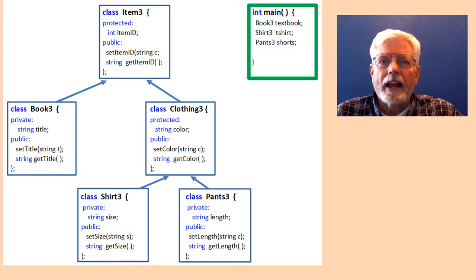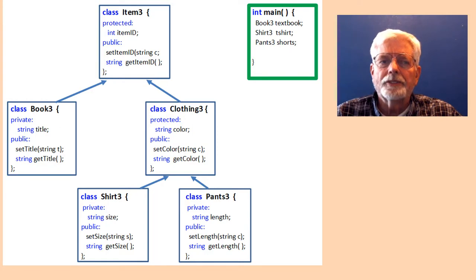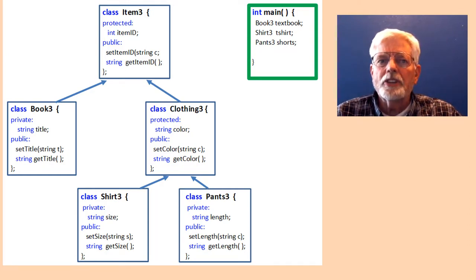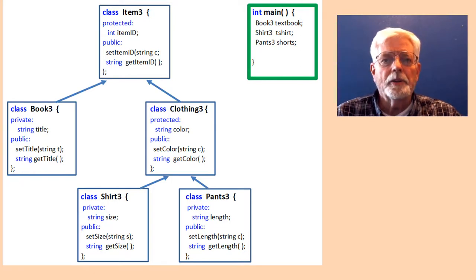Item3 is a base class, also known as a super class or a parent class. Book3 is inherited from item3 — it is also known as a derived class or a subclass to item3. Book3 is also a leaf node because it does not have any classes inherited from it. Clothing3 is a derived class inherited from item3. Shirt3 and pants3 are inherited from clothing3 and are leaf nodes. Each arrow represents an is-a relationship: we can say that book is an item, or shirt is a clothing and is an item. A class can have many derived classes inherited from it, but in C++ a class can only have one direct base class.